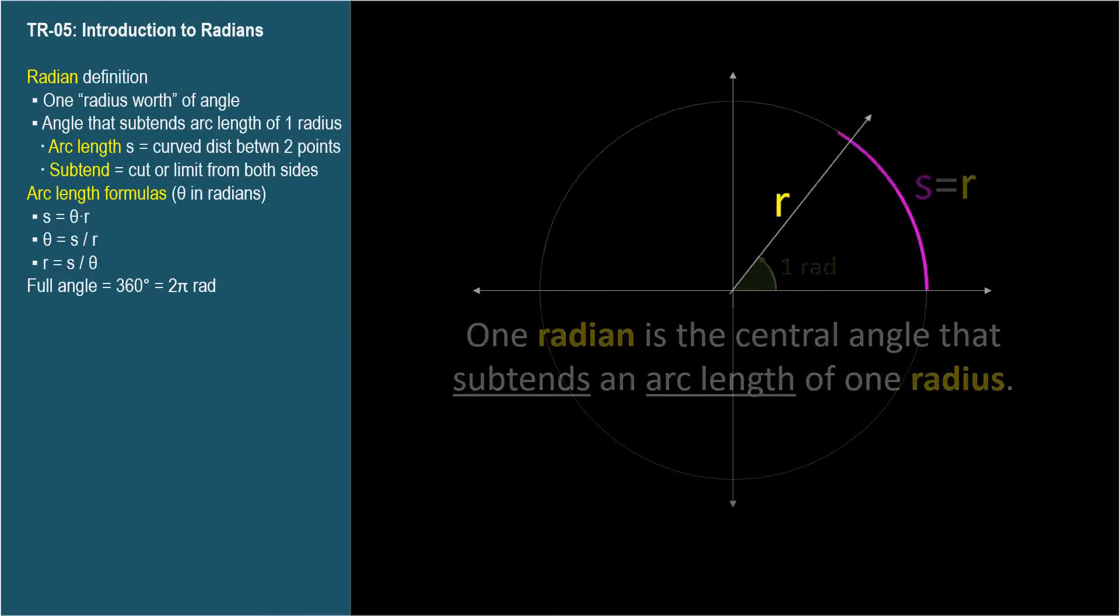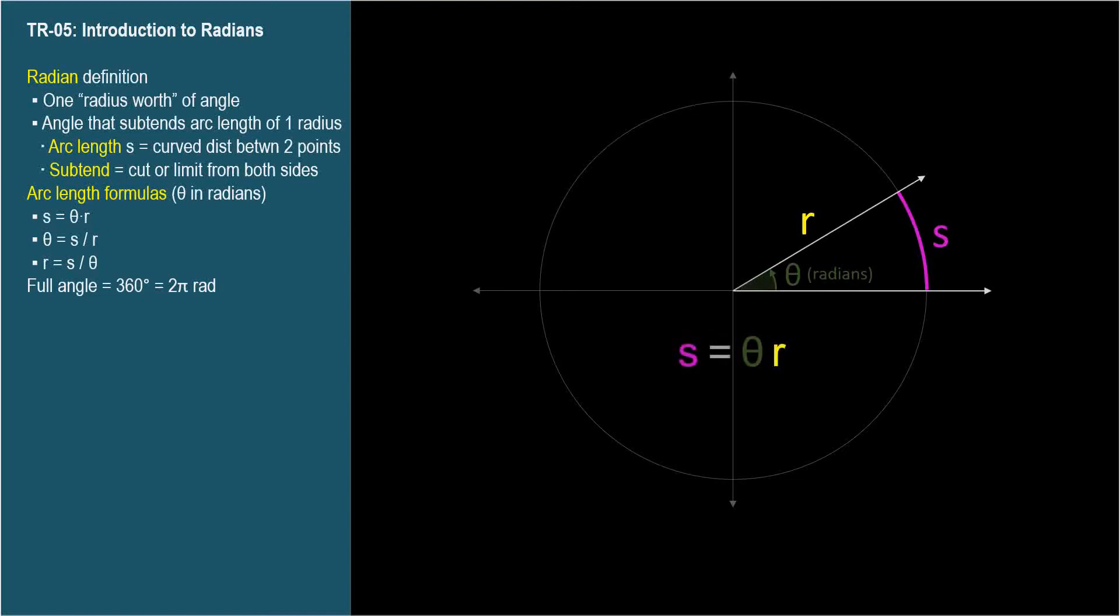So there's a mathematical relationship between arc length, radius, and theta, where theta is expressed in radians. If you know two of them, you can find the third.